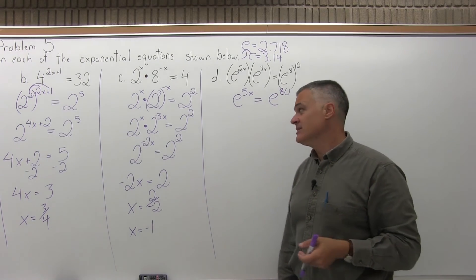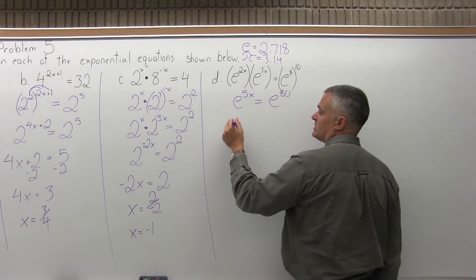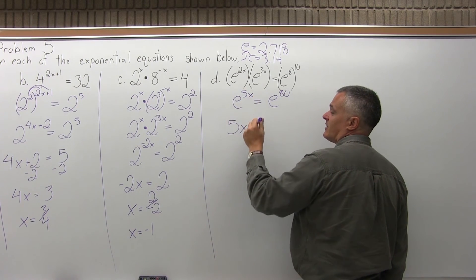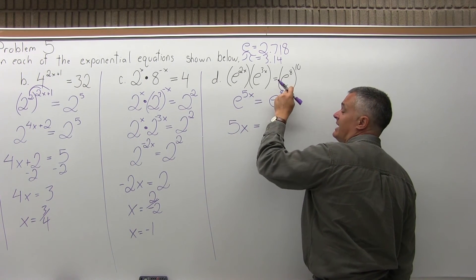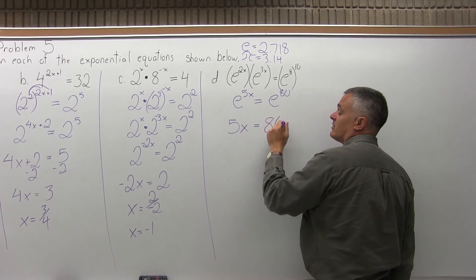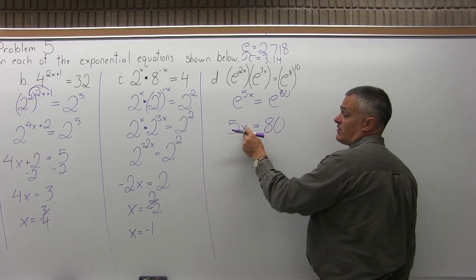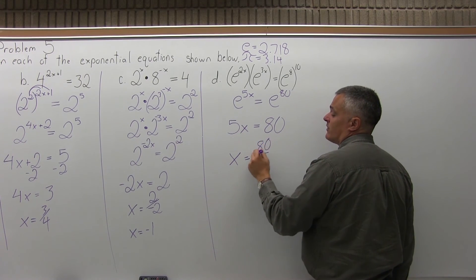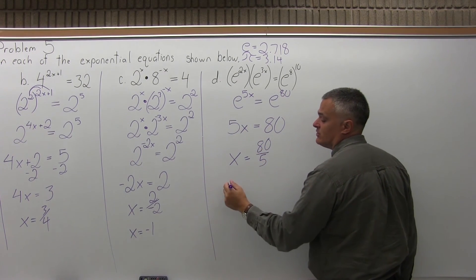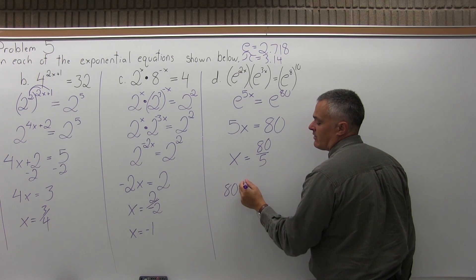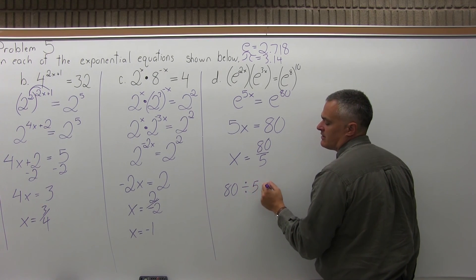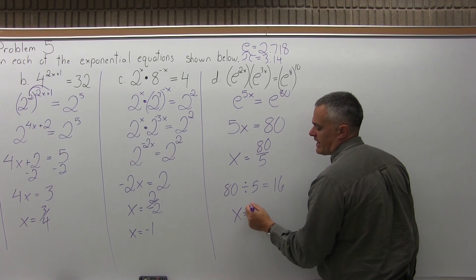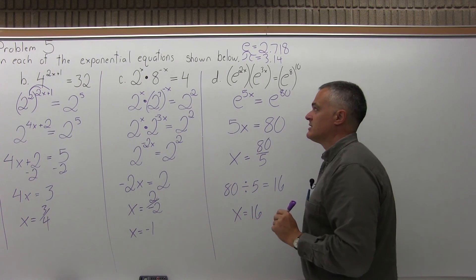Now the base is the same on both sides, so I can set the exponents equal to each other: 5x equals 80. Solve for x — divide out the 5. x equals 80 over 5. That reduces to 16. You might not recognize it, so use your calculator: 80 divided by 5 equals 16. So x equals 16 is the answer for part D.